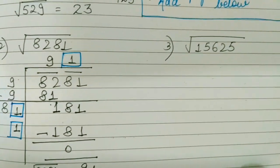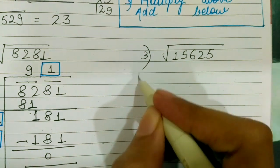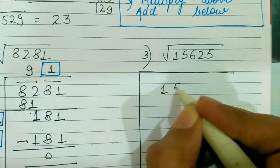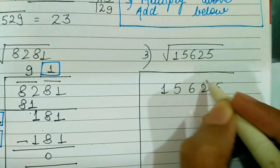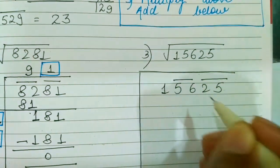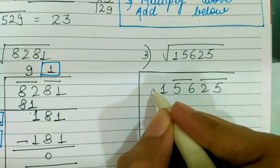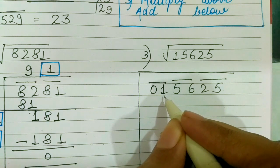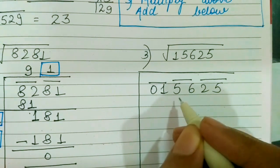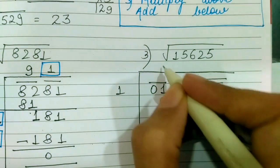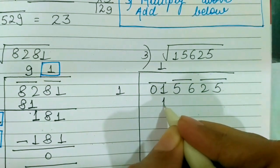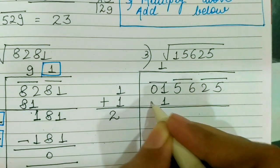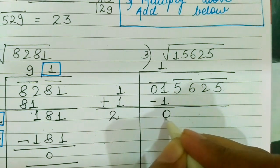Next number is under root of 15625. Let's start making pairs from the one's end. 1 pair will be of 25, 56. 1 is left alone so put a 0. The square of a number which is closest to 1 will be 1 only. 1 into 1 will give me 1 and 1 plus 1 is going to give me 2. Subtracting these, 0.